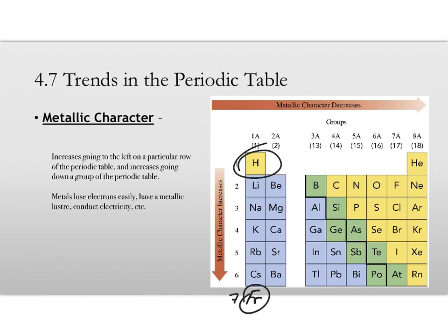Metals are elements that lose electrons easily. They have a metallic luster to them. You know, you know what that means. And they conduct electricity, they conduct heat, so on and so forth.